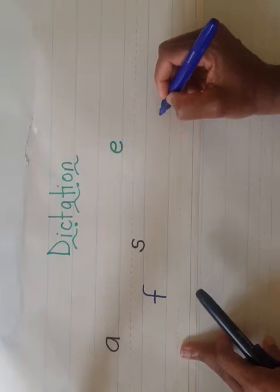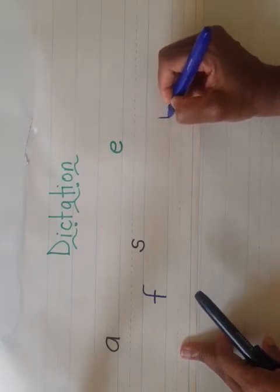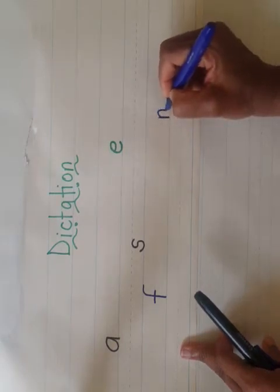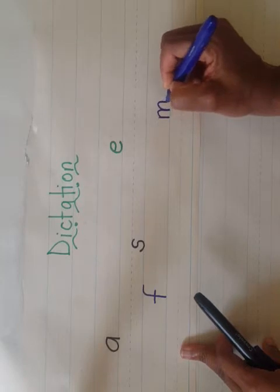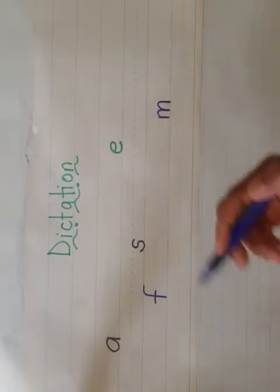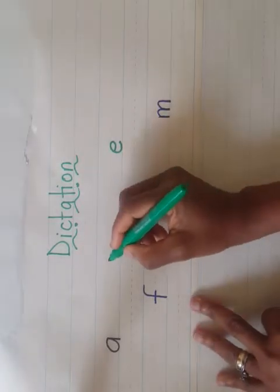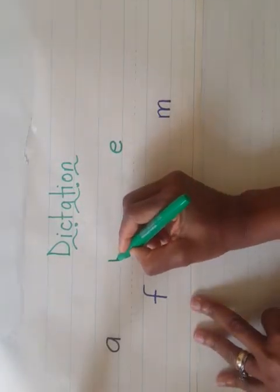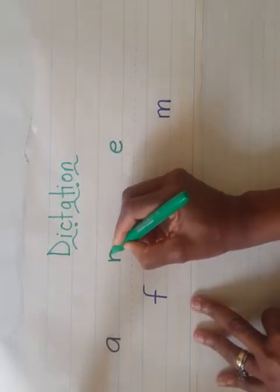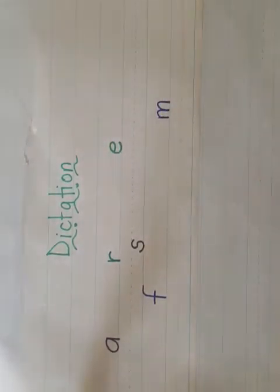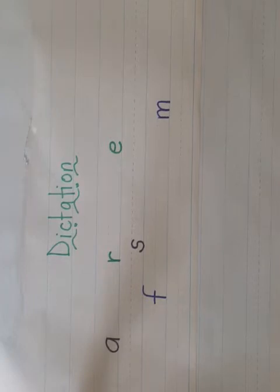Yes, M makes the 'mmm' sound, so you're going to write M. This is how we write M. What letter makes the 'r' sound, as in rat or rabbit? R — the letter R. You're right. I write the letter R — R makes the 'r' sound.